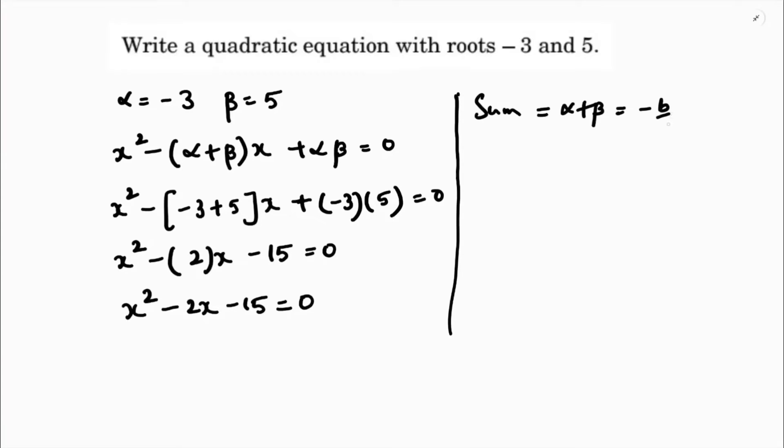Alpha is minus 3, beta is 5, equals minus b by a. So 2 equals minus b by a. Next, product of the zeros, which is alpha beta, minus 3 into 5, which is minus 15 equals c by a.